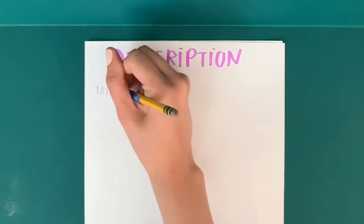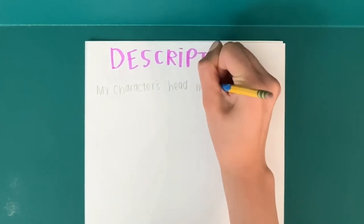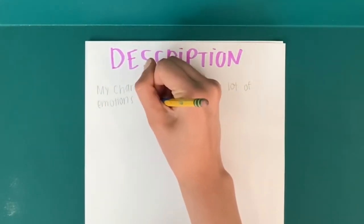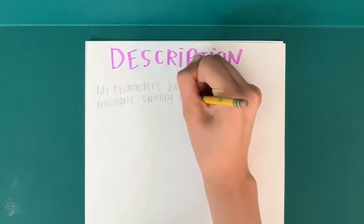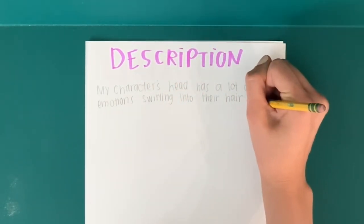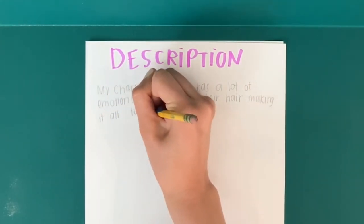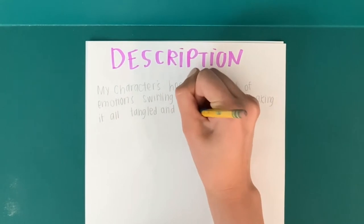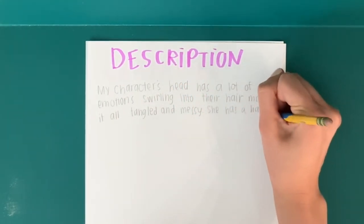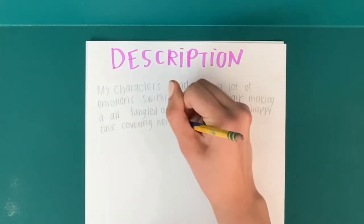Let's begin by writing a two-sentence description of our character space on the description page. This should just be a simple physical description. For mine, I'm going to write: the head has a lot of swirling emotions that become her hair, all tangled and messy. Now that you've written your description, pass this paper to the person on your right.